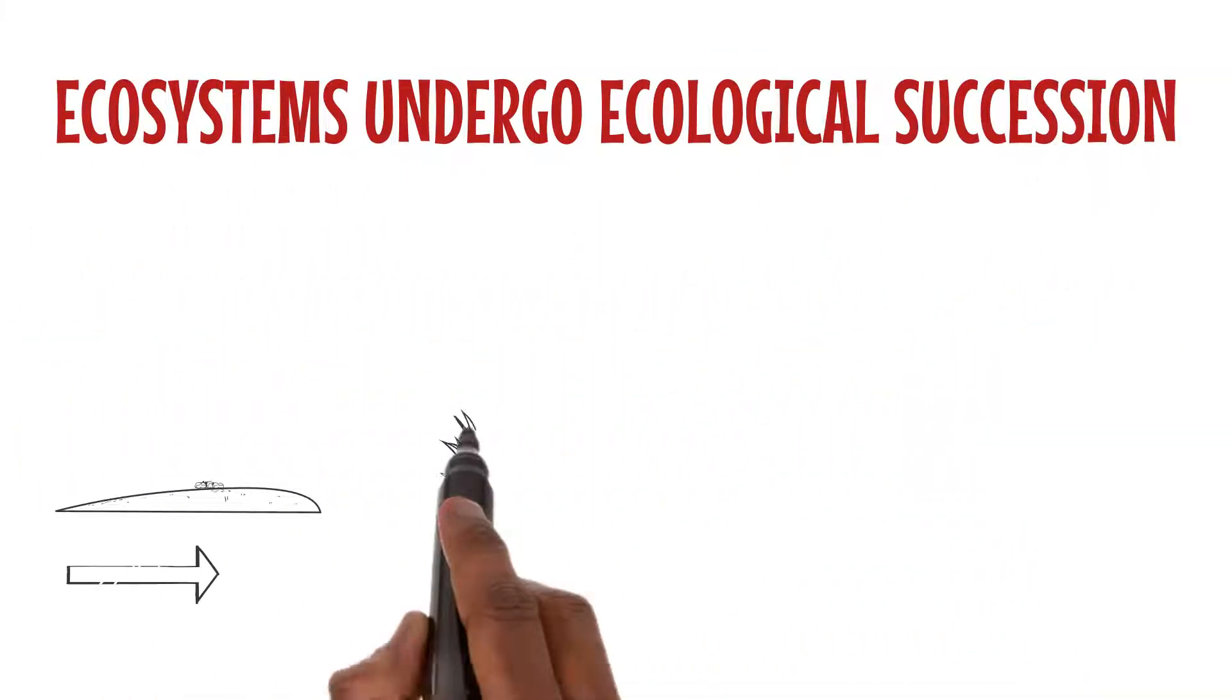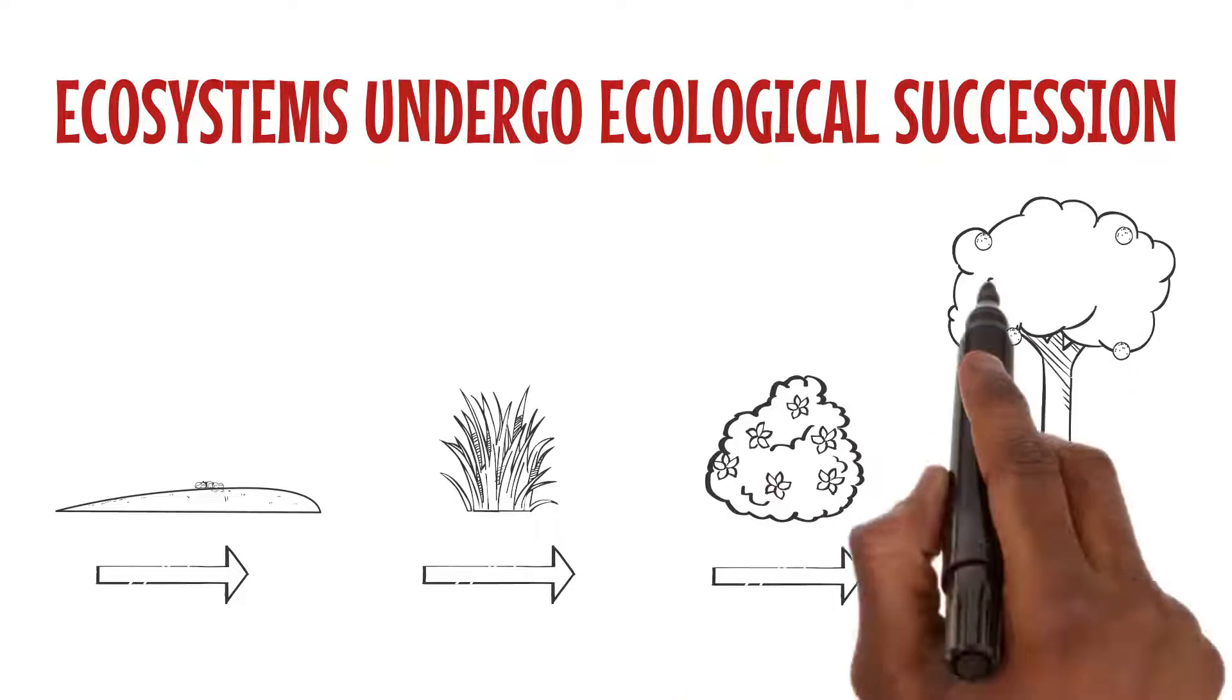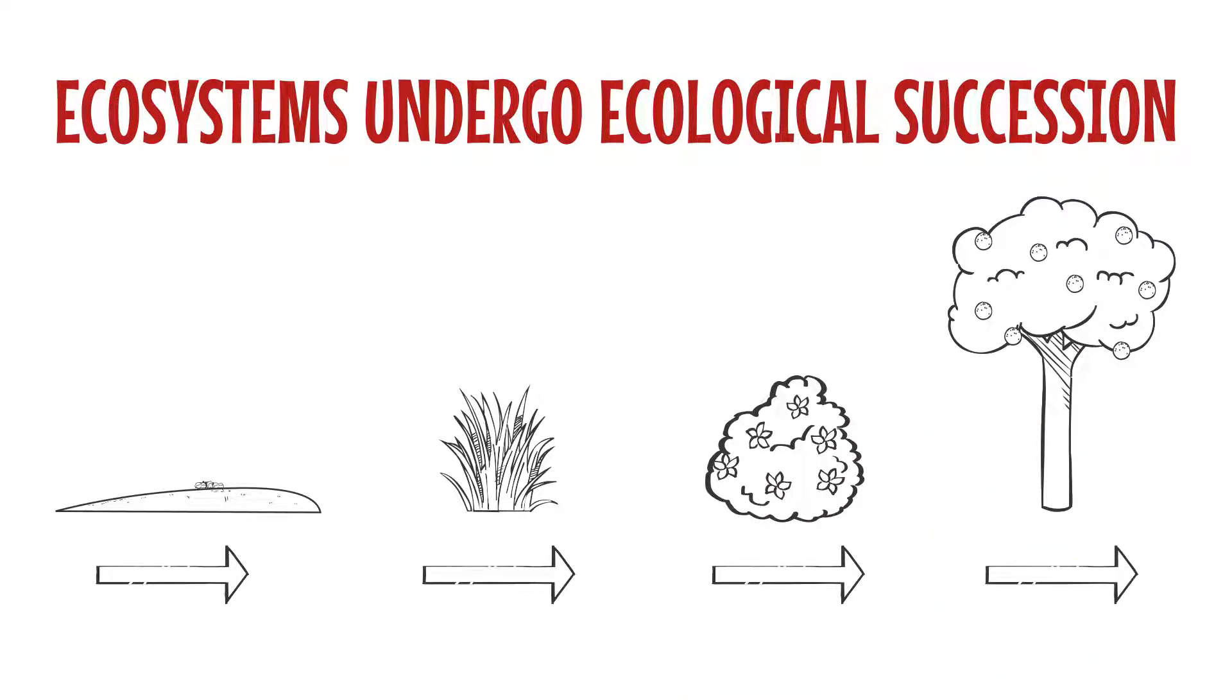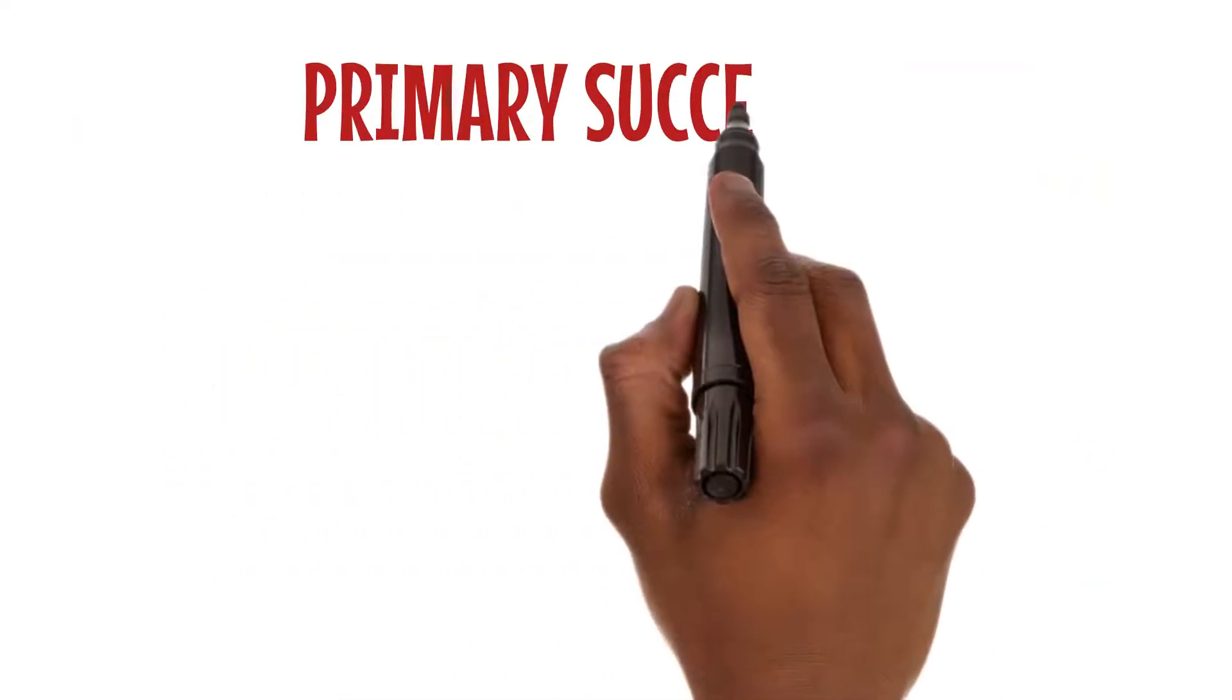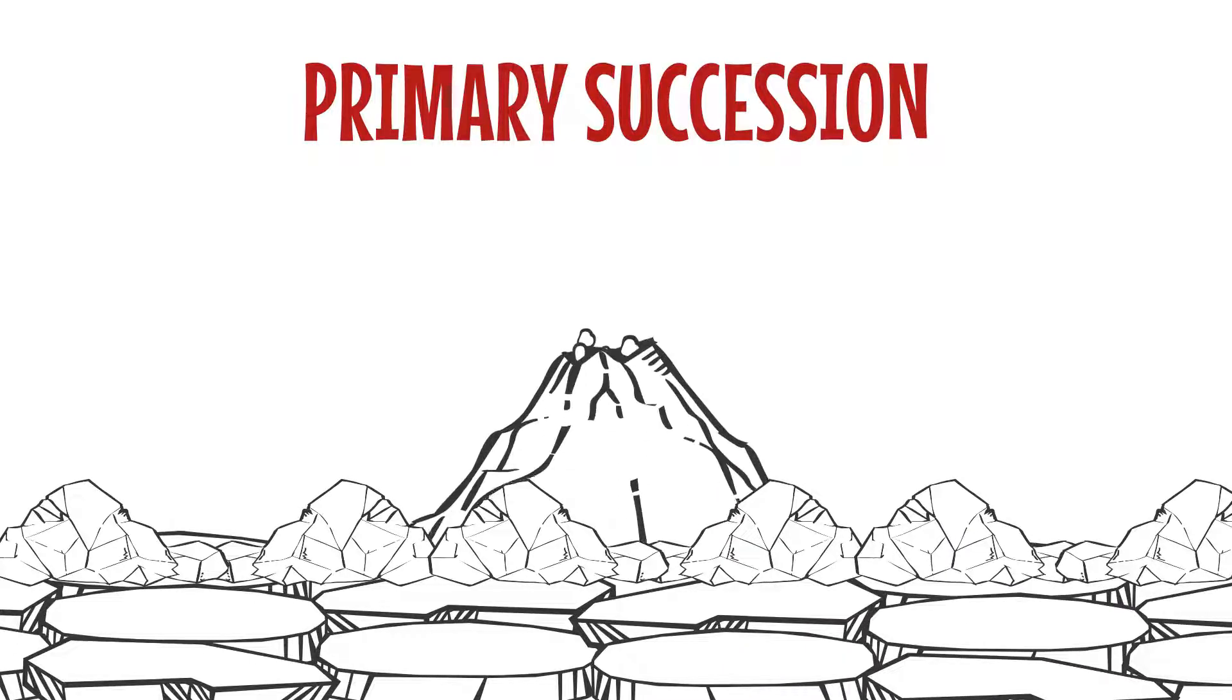Ecosystems undergo ecological succession, evolving from barren landscapes to thriving communities. Primary succession starts from scratch, like barren land after a volcanic eruption, while secondary succession occurs after disturbances like forest fires.